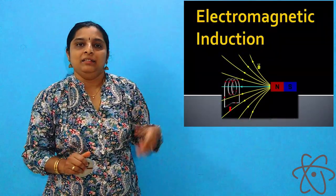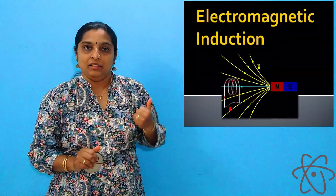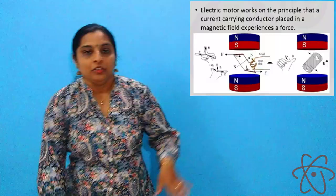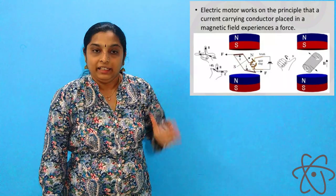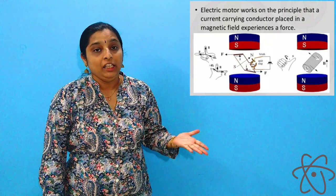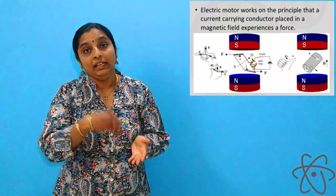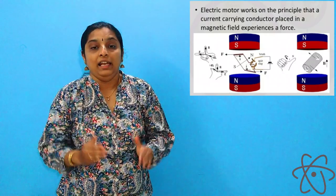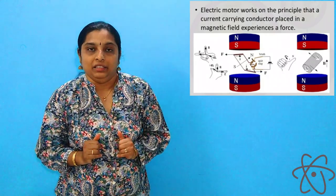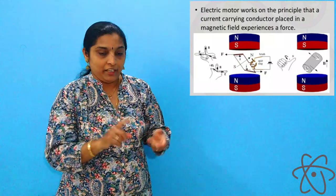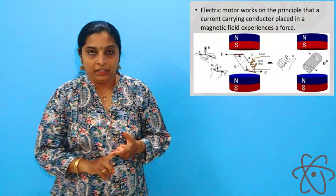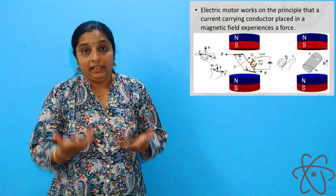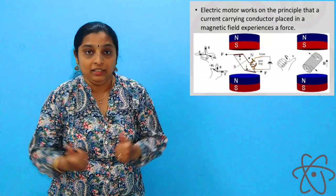First, what is a generator? A generator is simply based on the principle of electromagnetic induction. Electromagnetic induction means a changing magnetic field in a conductor induces electric current in another conductor. Now, if there is a changing magnetic field and a current is induced, we should know the direction in which that current is induced.